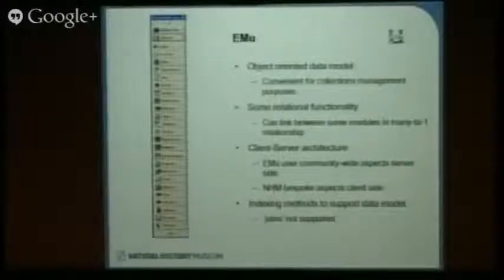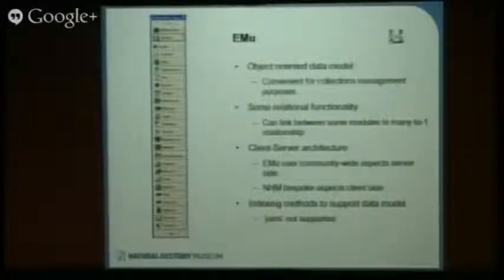There is, however, some relational functionality within the system, and you can have many-to-one relationships amongst some of those objects. For instance, a site may have had multiple specimens collected from it, so you can relate a whole bunch of specimen records back to that single geographic object. This is a simplification, but it's also client-server architecture, meaning there's some functionality on the server and some functionality within the desktop client that you see on your PC or if you remote in with a remote desktop.